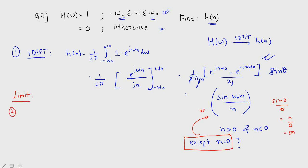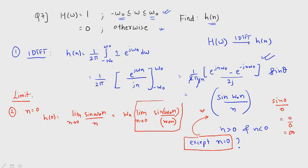When n is equal to 0, H of 0 equals the limit as n tends to 0 of sine(omega 0 · n) over n. Because if we put n equal to 0 it would be indeterminate, so we use the limit — n is close to 0 but not exactly 0. Now I am multiplying and dividing by omega 0, so we get omega 0 times the limit as n tends to 0 of sine(omega 0 · n) over (omega 0 · n). We need to match this to the limit formula: limit as n tends to 0 of sine(theta) over theta equals 1. So the result is omega 0 times 1, which equals omega 0. For n equal to 0, the answer is omega 0.